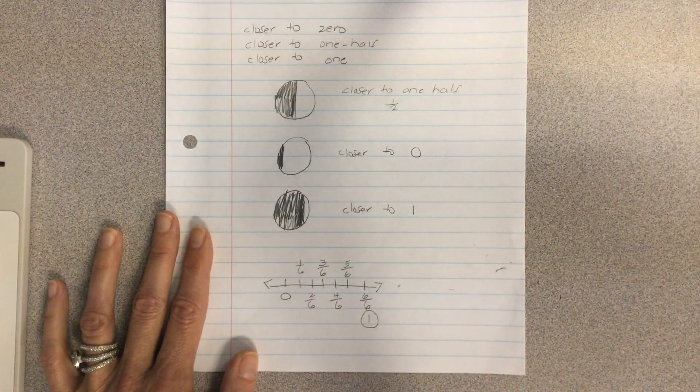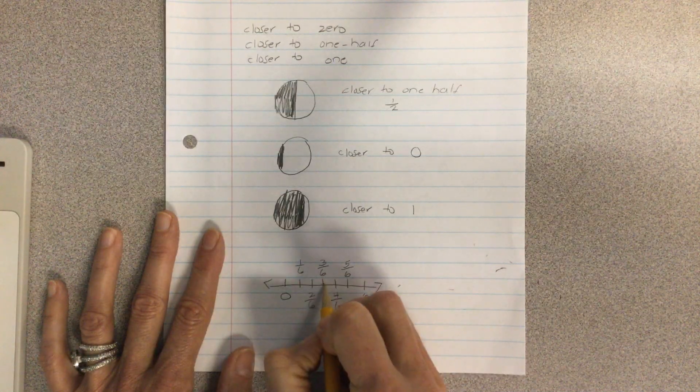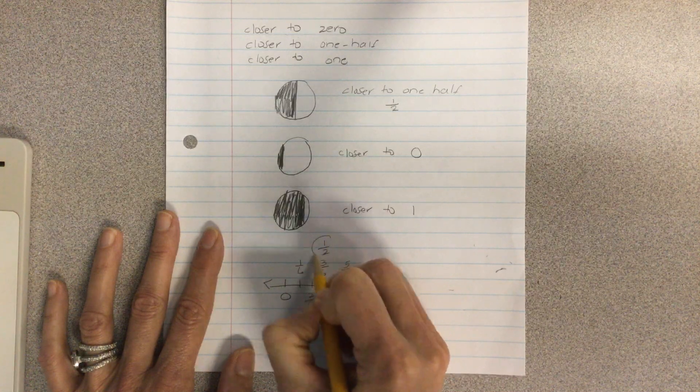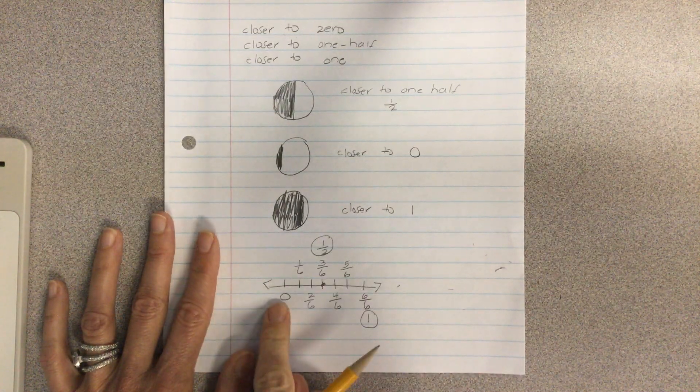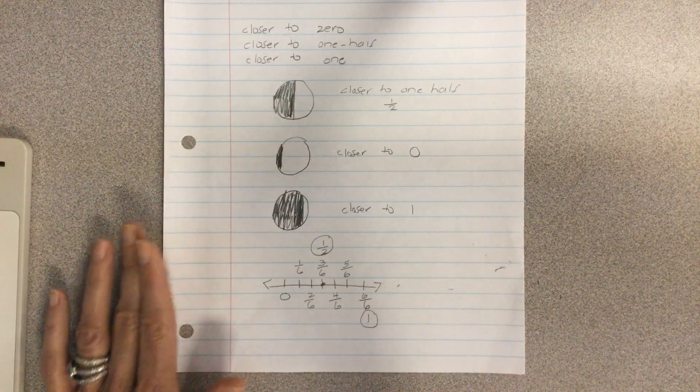And then we have six sixths. Now keep in mind this three sixths right here, you're at the halfway point. So three sixths is the same as one half. You're going to want to keep that in your mind as you're thinking if items are closer to zero, closer to a half, or closer to one.